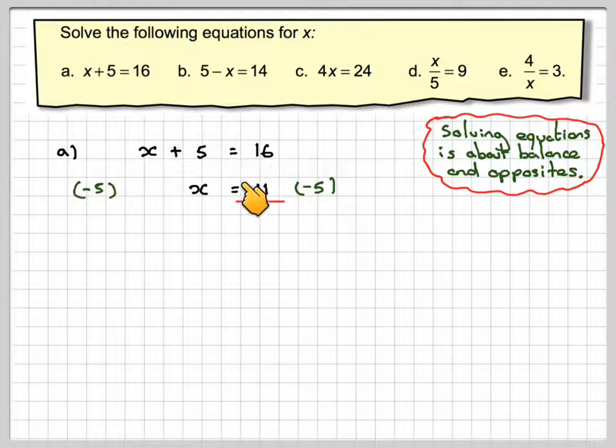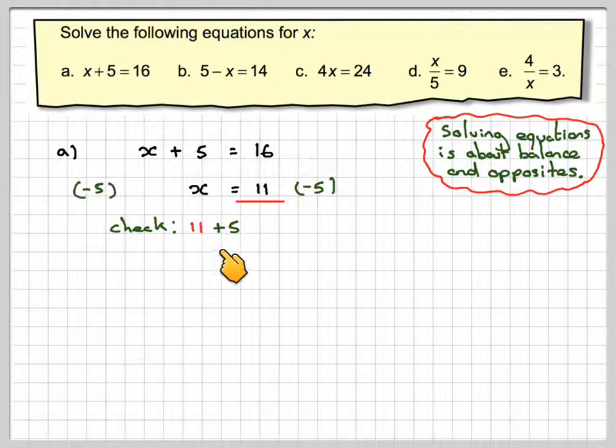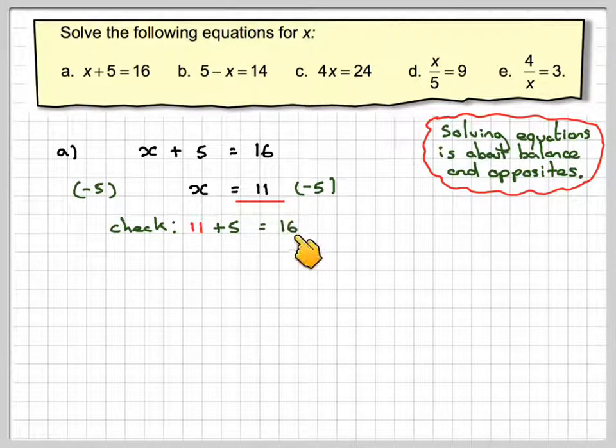Notice that my equals signs are in a column, one underneath the other. Now we should just do a little check first, so you can check back in the original equation. So we put 11 instead of x to get 11 plus 5, which equals 16. Correct.